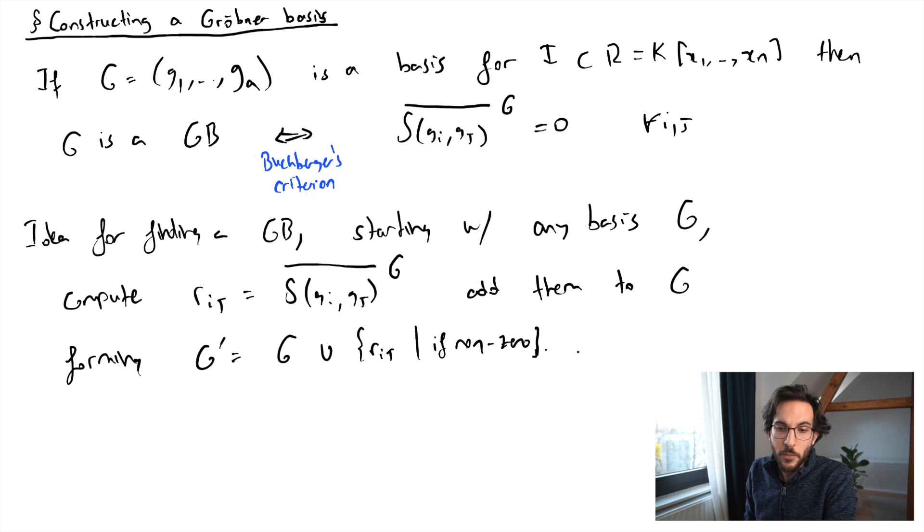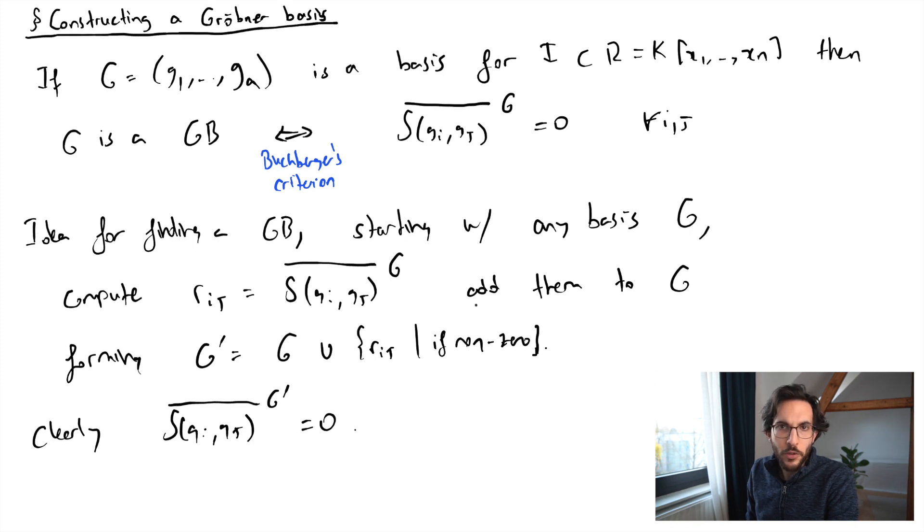By default all the s-polynomials S(gi, gj) will now reduce to zero modulo this larger generating set for the ideal. But what about the new s-polynomials that we have to consider? Applying Buchberger's criterion we also need to check if the new polynomials give us some s-polynomials that we can still reduce to zero.